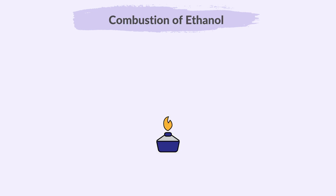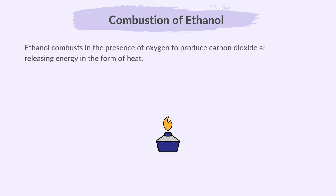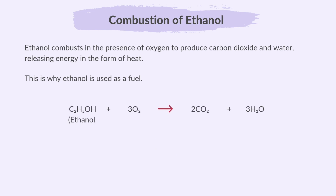Now we shall describe the combustion of ethanol. In simple terms, combustion is the burning of a substance. Ethanol combusts in the presence of oxygen to produce carbon dioxide and water, releasing energy in the form of heat. This is why ethanol is used as a fuel.